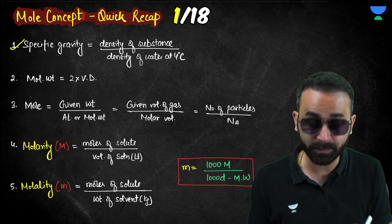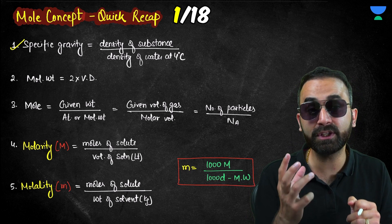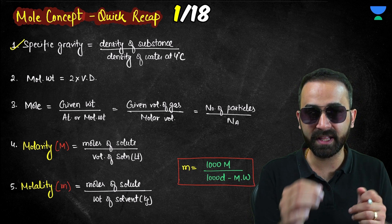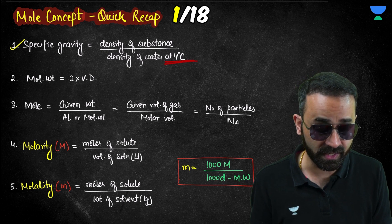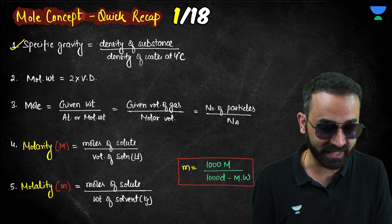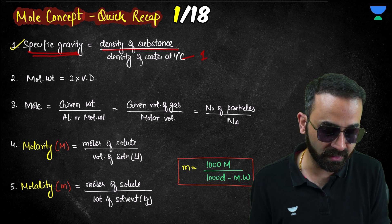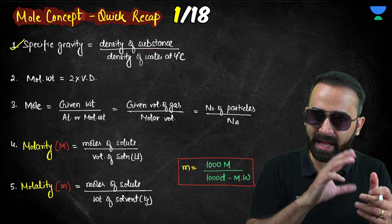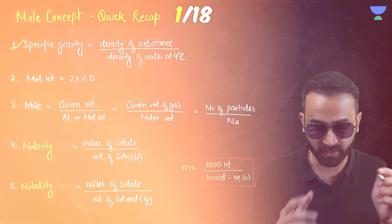The first formula is specific gravity. It is the density of a substance divided by the density of water at 4 degrees Celsius. Since the density of water at 4°C is 1, specific gravity is essentially the density of the substance calculated with respect to the density of water.